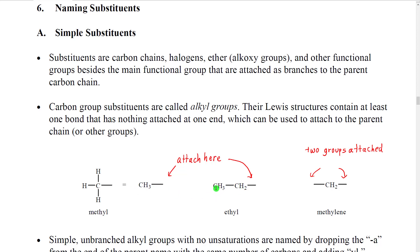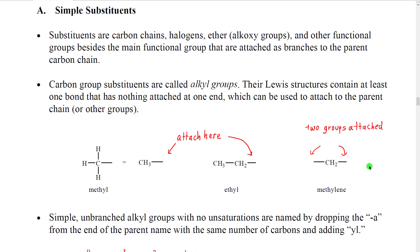A two-carbon group is called ethyl, and on this second carbon it has a bond too. The first carbon has two hydrogens and then it has an empty bond. There are even carbon groups that have more than one place to attach. For example, CH2 can attach on one bond and on a second bond, and that's called methylene.